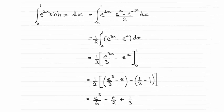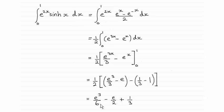Hi there. In this question we're asked to integrate from 0 to 1 e to the power 2x multiplied with sinh of x, with respect to x. As you can see, the answer is e cubed over 6 minus e over 2 plus 1 third.